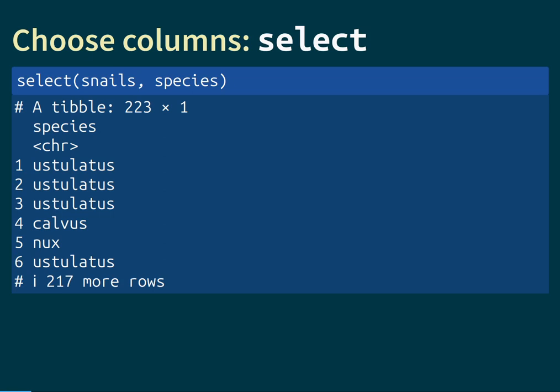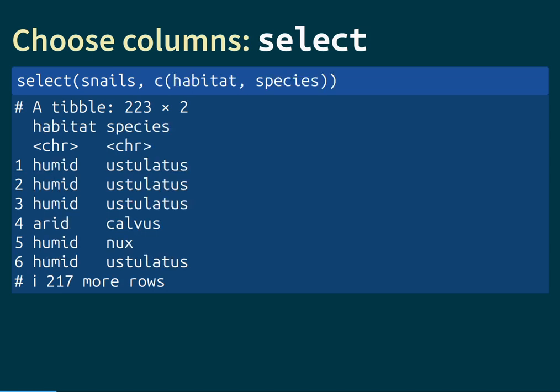The first function we're going to look at is called select, and select chooses columns of a dataset. The way it works is we write down the function name select, and the first input is the dataset we're working with — here the Galapagos land snail data assigned to the variable snails. The next input is the name of the column we want to choose. If we specify the species column, all other columns are dropped and we're only left with species.